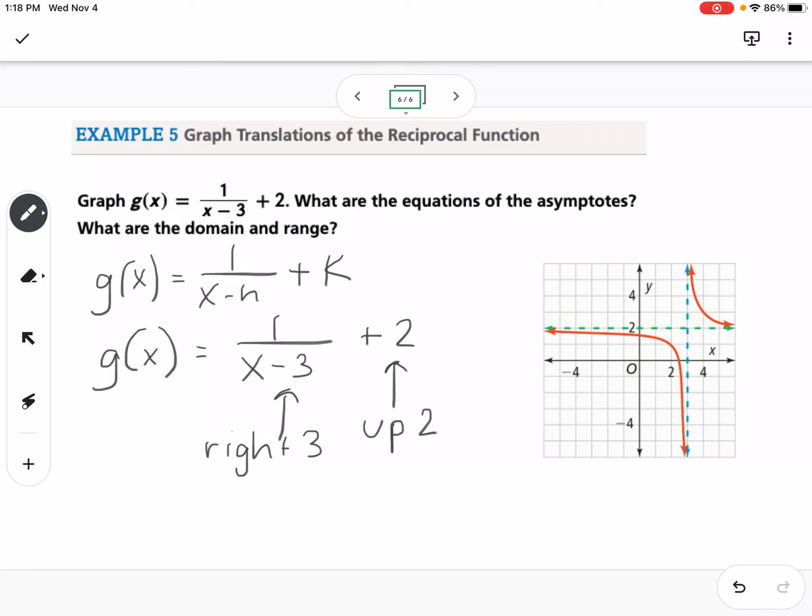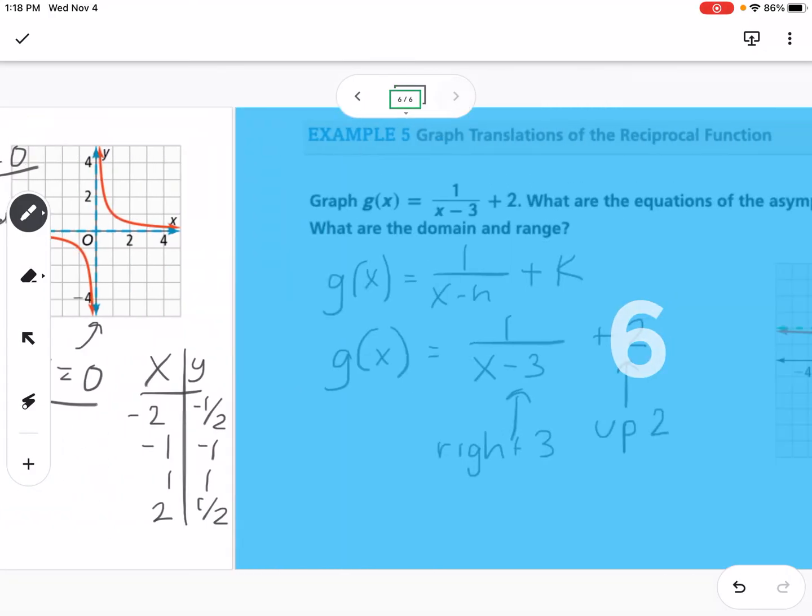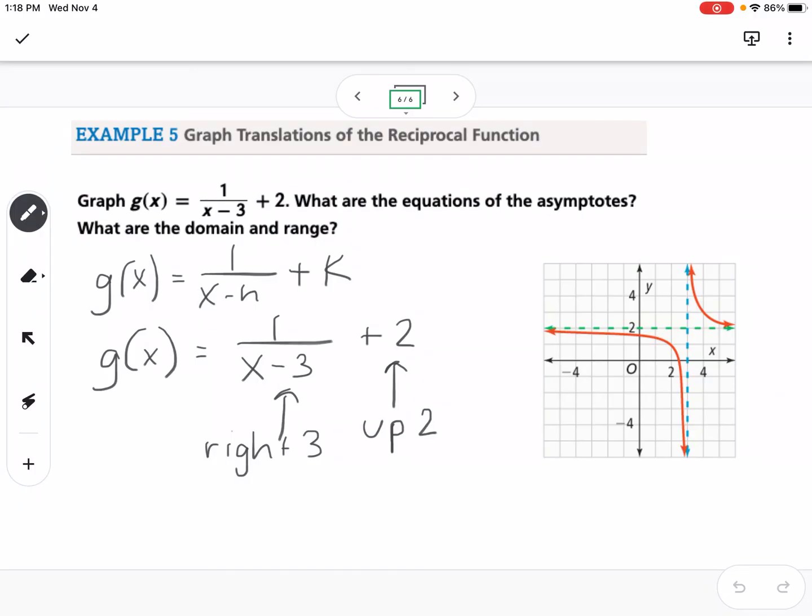With the reciprocal function, you know your original parent function. Your asymptotes are at x equals 0 and y equals 0. Now you have to think if I'm shifting it to the right 3, that's going to give me x equals 3 is my vertical asymptote. I'm shifting it up 2, that means y equals 2 is my horizontal asymptote.